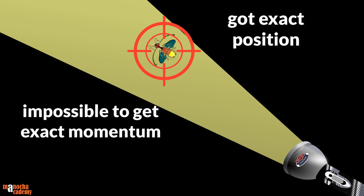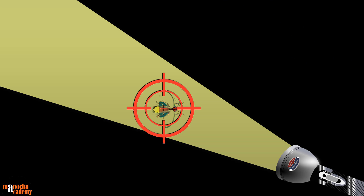By shining the torch light you got the exact position of the firefly, but it is impossible to get its exact velocity or exact momentum. To get the firefly's exact velocity, you will have to turn off the torch and use the firefly's own light to calculate its velocity and direction of motion — but in the dark it is impossible to know its accurate position. So when you are focusing on position, it is impossible to focus on velocity.